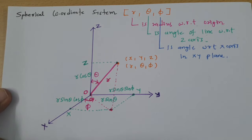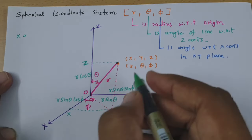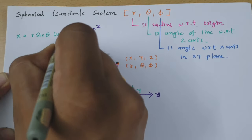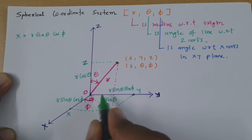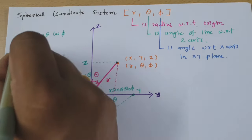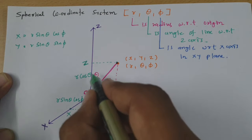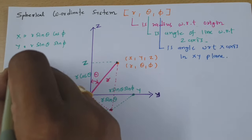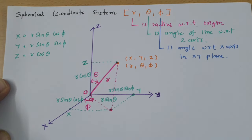So to summarize the conversion formulas: the X component is R sin Theta cos Phi, the Y component is R sin Theta sin Phi, and the Z component is R cos Theta. This is how we can translate from Spherical to Cartesian coordinates.